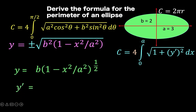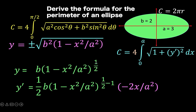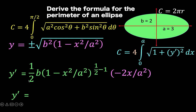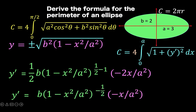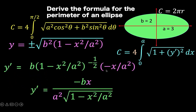To find y prime, we use the power rule of differentiation. b is a constant, times the exponent one-half gives one-half b; copy the base, and subtract 1 from the exponent one-half to get negative one-half; then times the derivative of the inside function by the chain rule. The derivative of the inside function is negative 2x over a squared. Simplifying, the negative 2 and the denominator 2 cancel to give negative x. We have negative x with exponent negative one-half. With a negative exponent, we write the entire exponential term in the denominator with a positive fractional exponent, then back to radical notation. So in the numerator we have negative bx, and in the denominator we have a squared times the square root of 1 minus x squared over a squared. This is the value of our y prime.